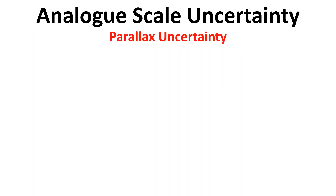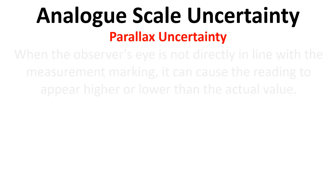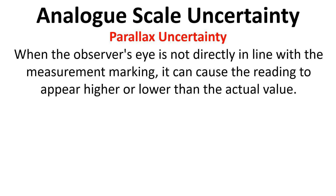Another type of error to be mindful of when reading analogue scales is parallax uncertainty. This is where the observer's eye is not directly in line with the measurement marking, and it can cause the reading to appear higher or lower than the actual value. This isn't about quantifying uncertainty but being aware of a source of error that you should try to avoid.